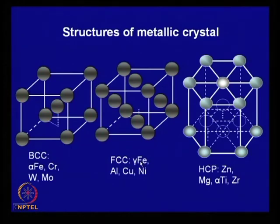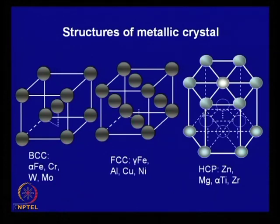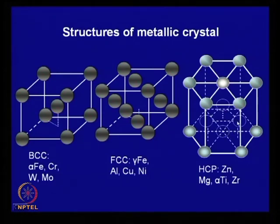In FCC, you have atoms at the corners of the cube and at each of the face centers. The hexagonal close-packed (HCP) structure is found in metals like zinc, magnesium, alpha titanium (the room-temperature form of titanium), zirconium, and several others. In HCP, atoms are arranged in a hexagonal pattern. You have a set of atoms in the base layer, and an intermediate layer whose positions are just above the centroids of the triangles formed by the three basal plane atoms.